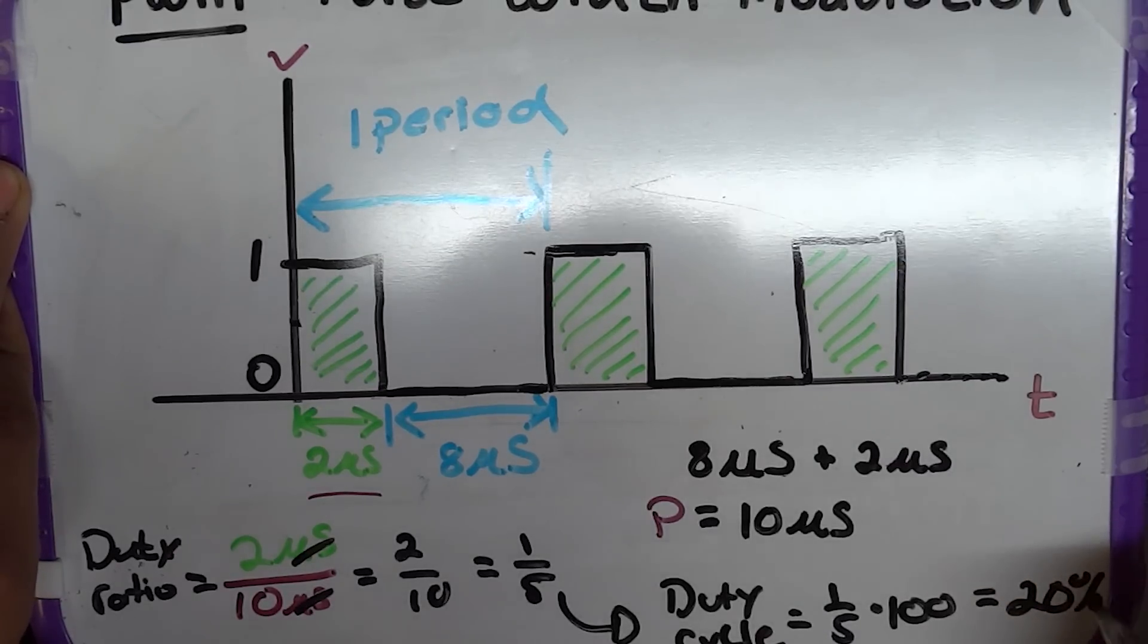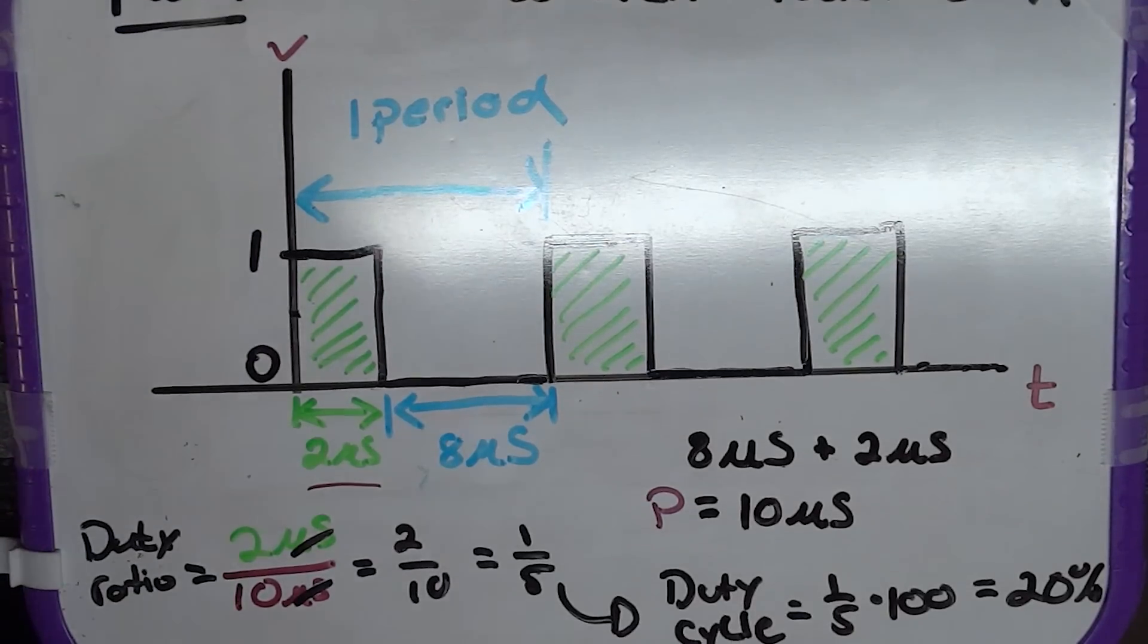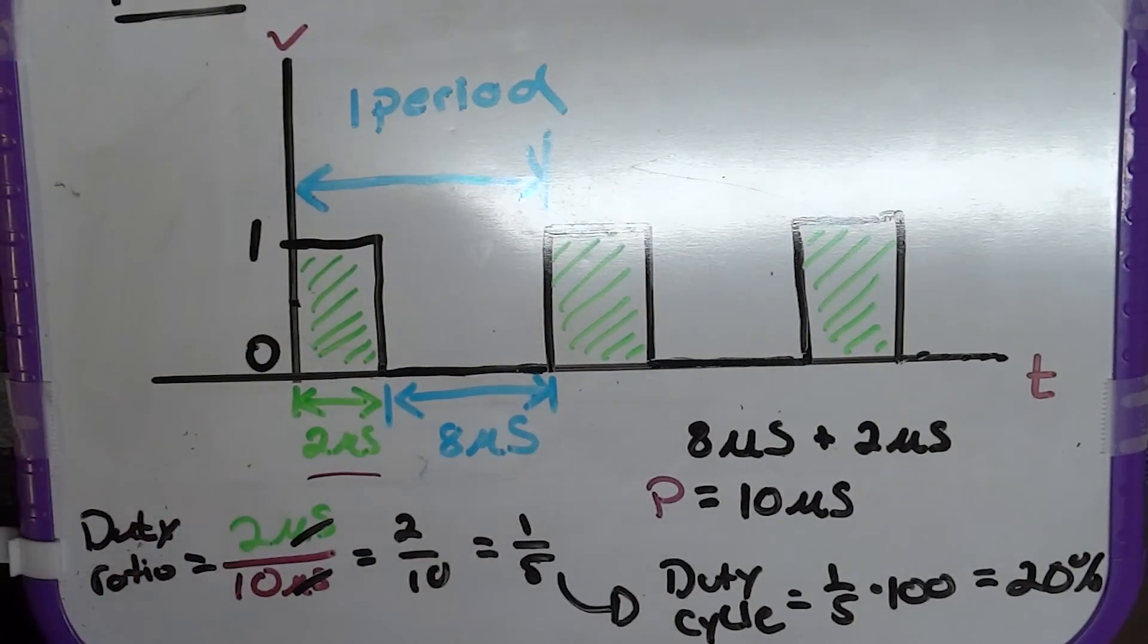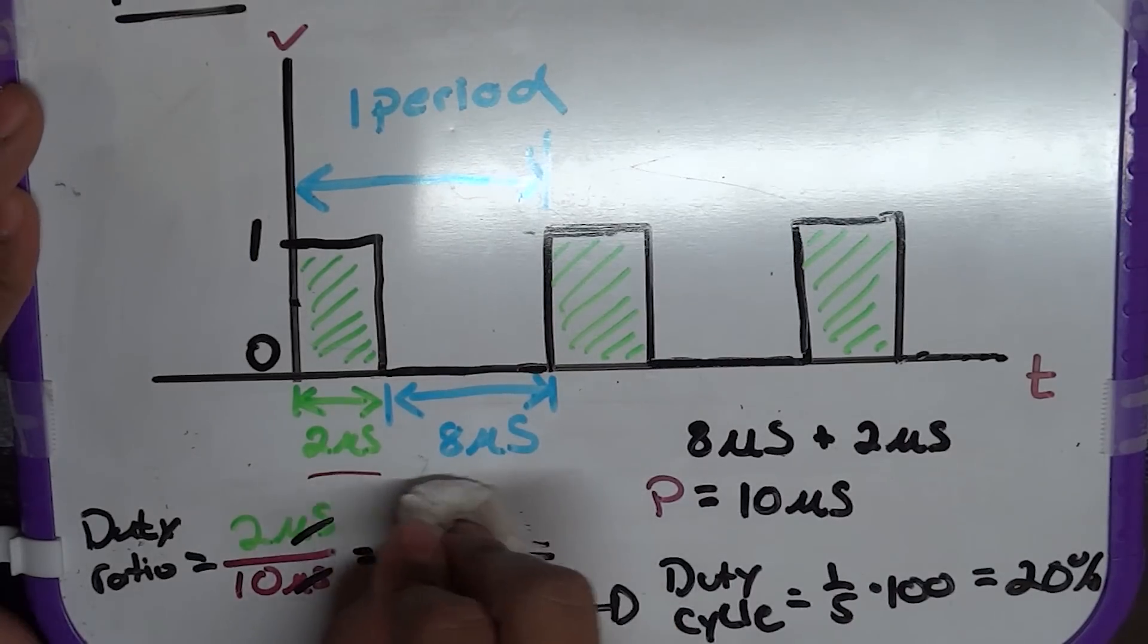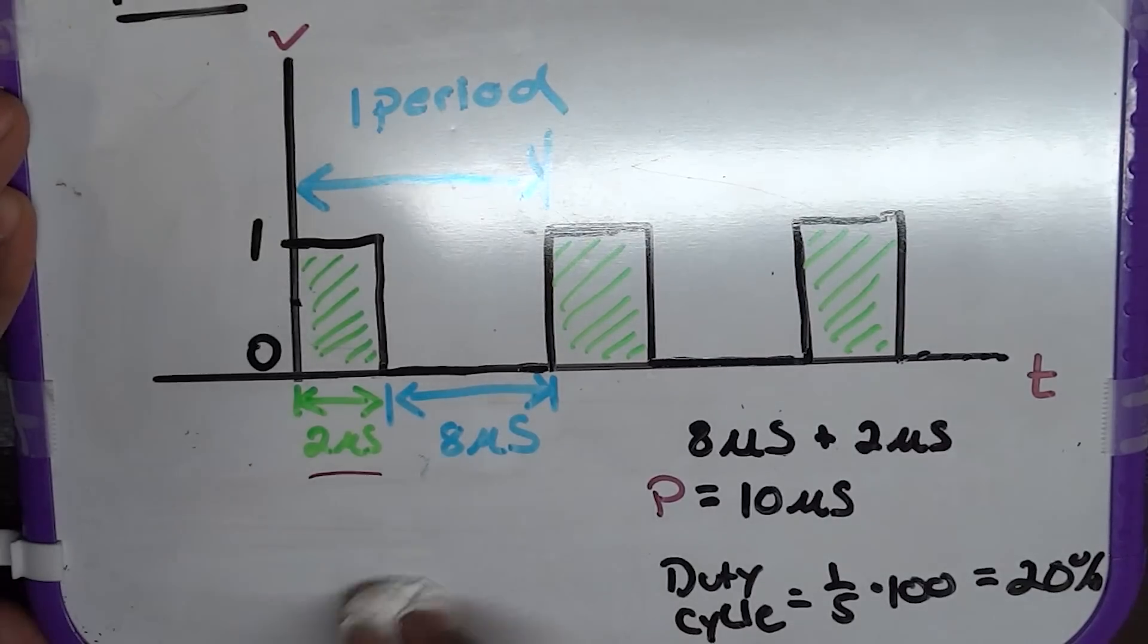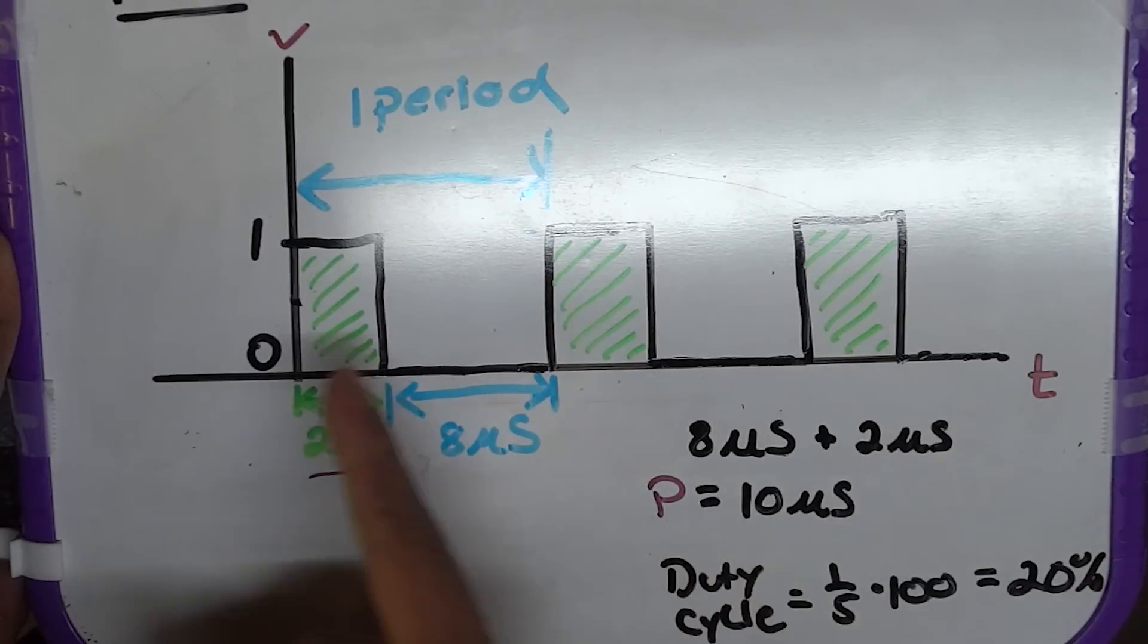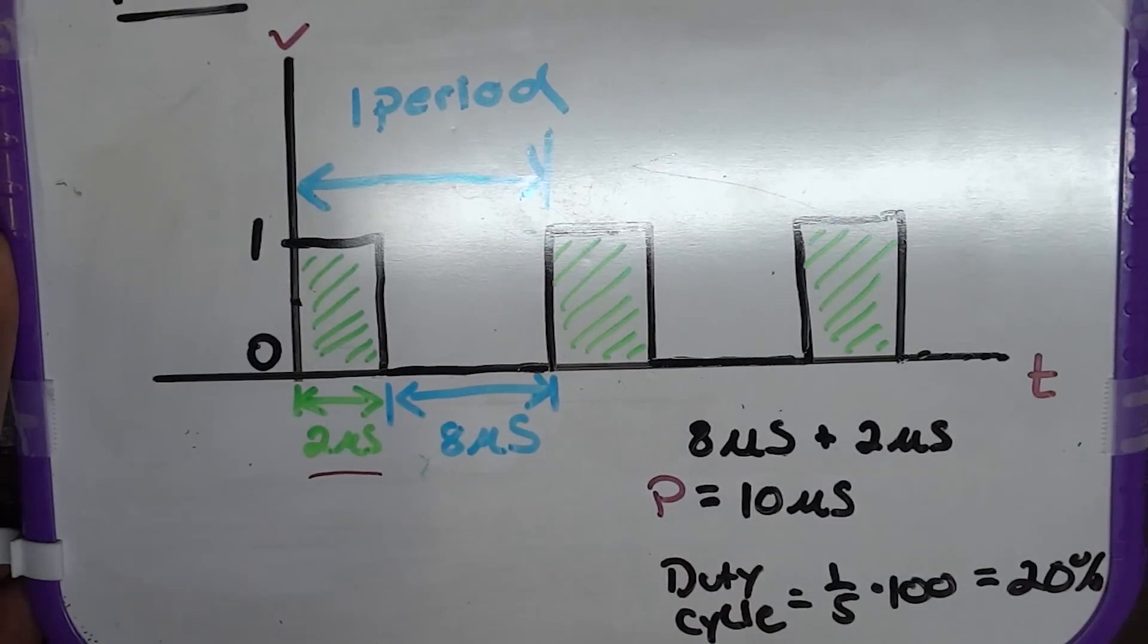And that's a percentage. So, the duty cycle is the ratio of these two multiplied by 100. The ratio of the total to the on time. I'm sorry. So, the duty cycle is a ratio of the on time versus the total time. That would be your duty cycle in this case.